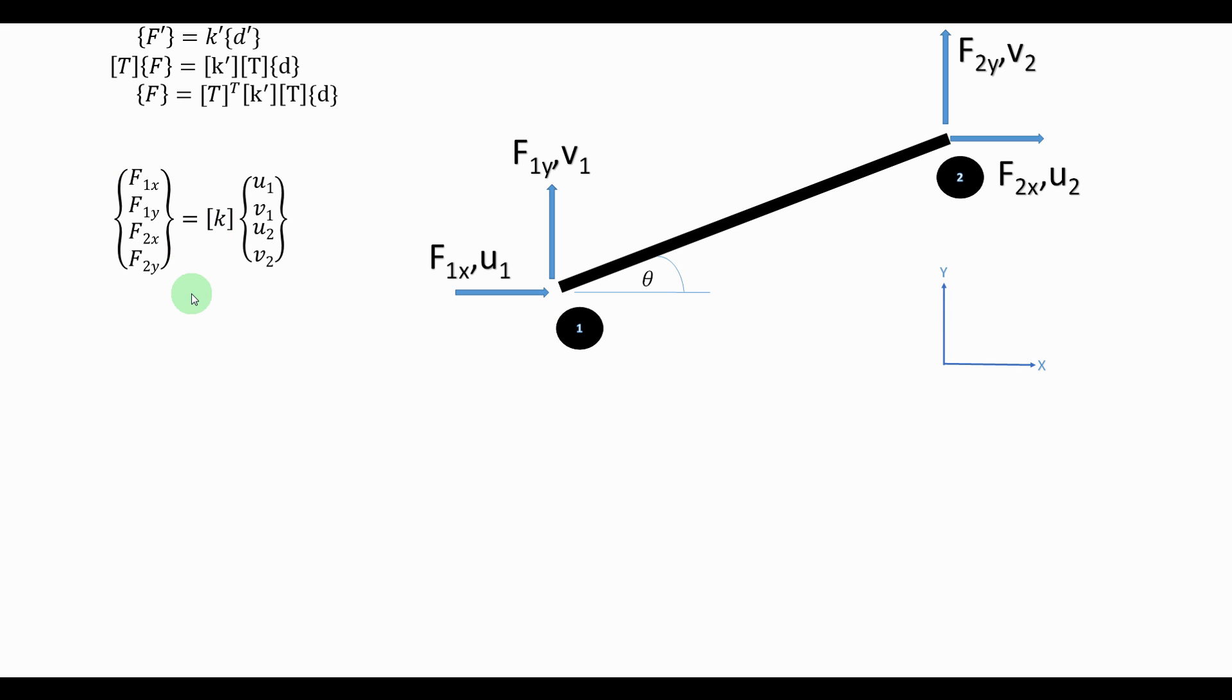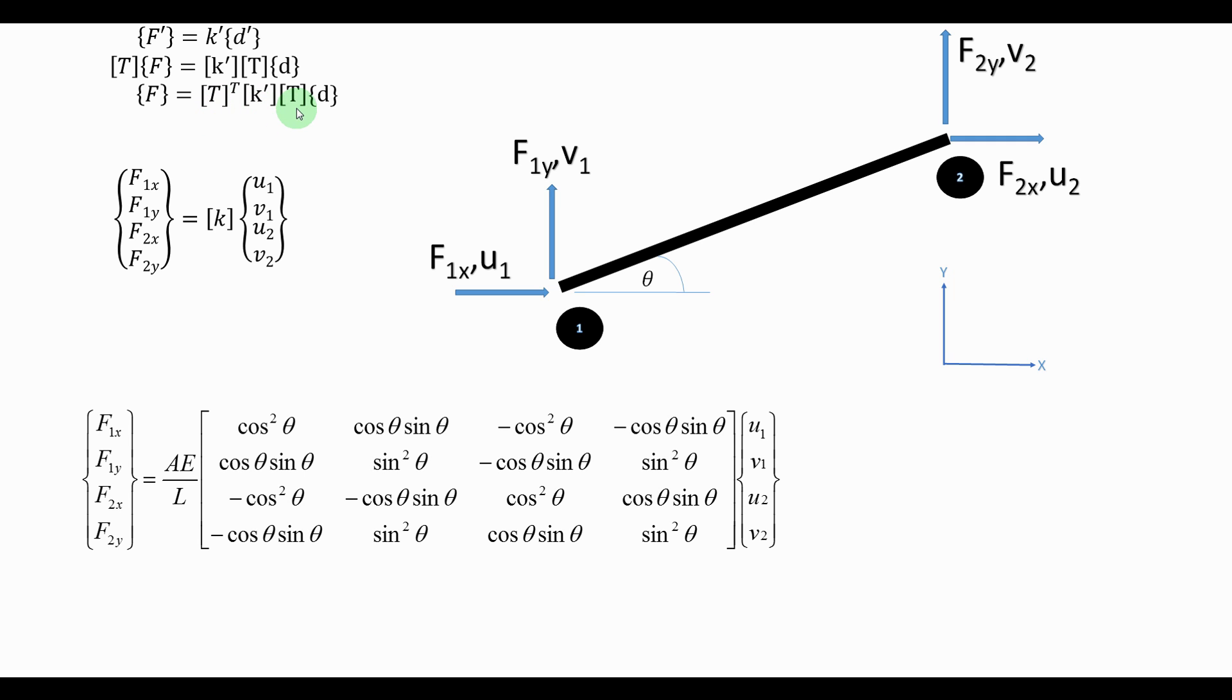So this comes out as that. You can relate that K equals T transpose K accent T.